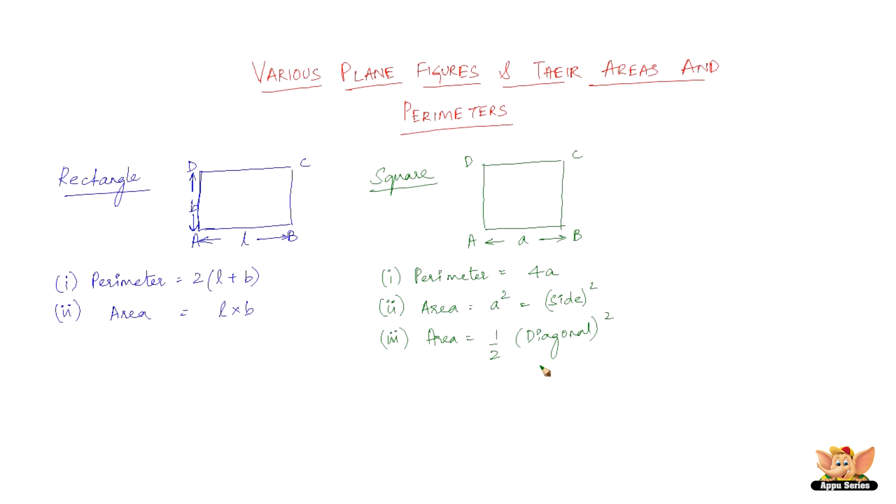For square there is another way of finding out the area. That area would be ½×diagonal². Diagonal is the joining of the two opposite corners of a square, so ½×AC² or ½×DB² will also give you the area of the square.